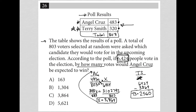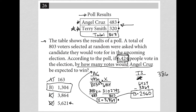The question wants to know by how many votes Angel Cruz would be expected to win — that's the difference between these two numbers. Looking at the answer choices: C can't be right because the question asks by how many votes Angel Cruz wins, not total votes received. D can't be right because Angel Cruz only received 3,864 votes — there's no way the margin could be 5,621. A seems too small. So B must be the correct answer: 1,304. And indeed, 3,864 minus 2,560 equals 1,304. The answer is choice B.